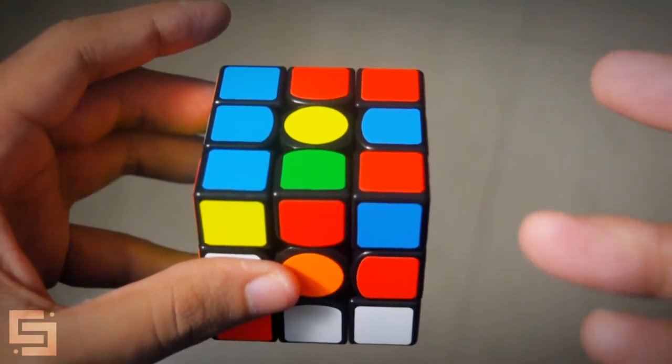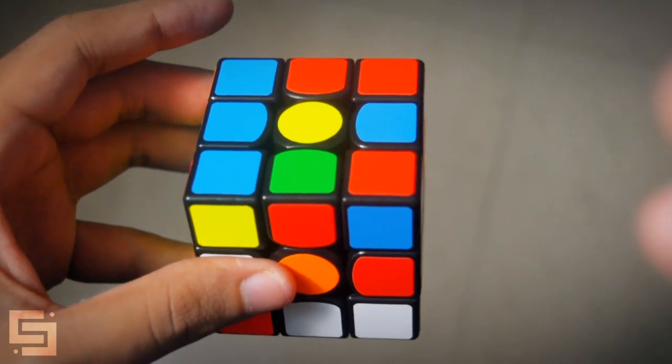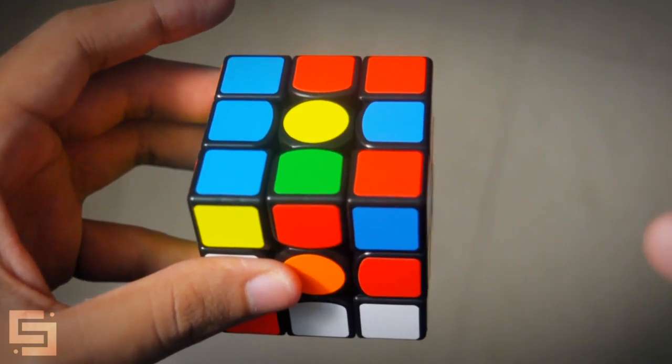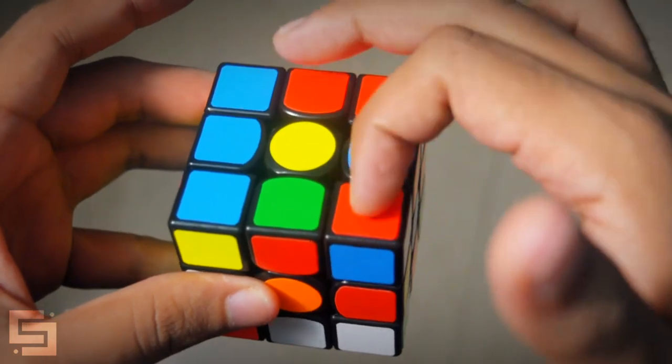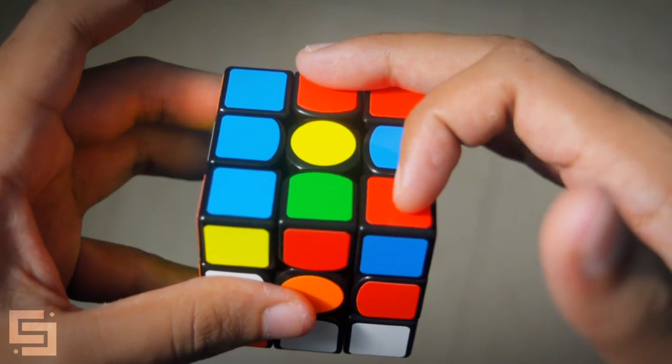However because you have an easy cross and you also have an easy first pair you should be trying to look out for another pair which you can potentially solve as your second pair. In this case we have this F2L pair right in here. Putting down the orange is not going to disturb this F2L pair at all.